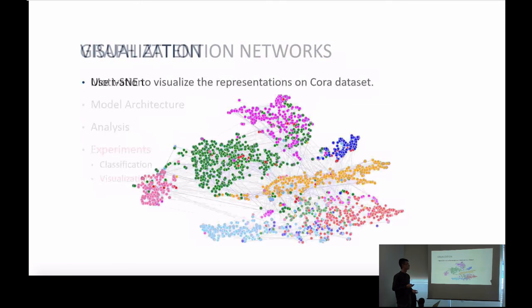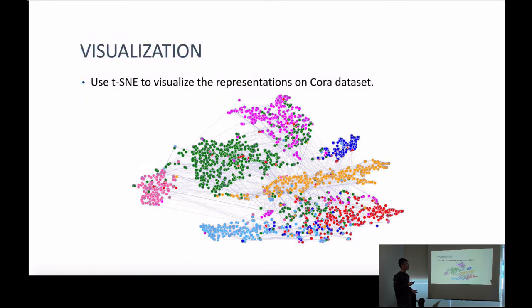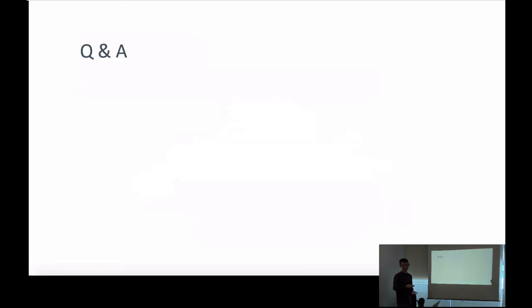For the visualization part, we use the Cora dataset and project the learned representations into a two-dimensional space using t-SNE. Different colors correspond to different categories. The classification boundaries are very clear, with well-separated clusters of pink, green, blue, shadow blue, yellow, and red. This concludes the presentation. Thank you.